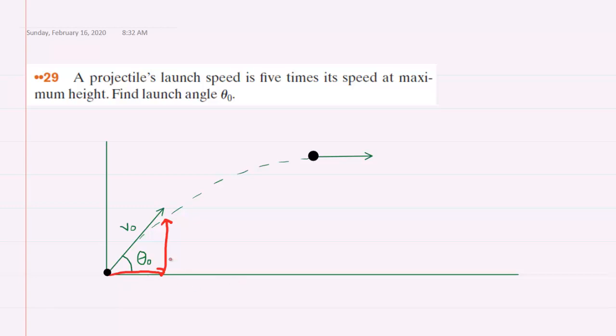Now for the x component we can see that we've drawn a right triangle. In that right triangle we have the cosine of the angle theta naught equal to the adjacent side, which is our x component of the initial velocity, over the hypotenuse which is labeled v naught.